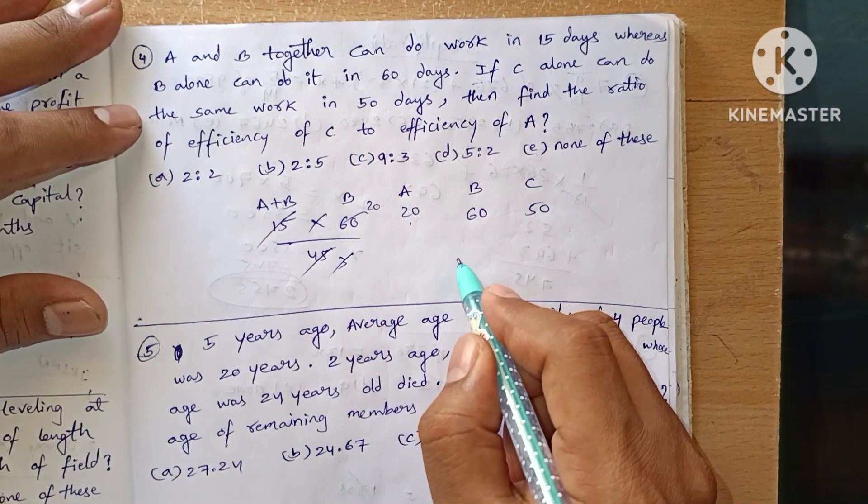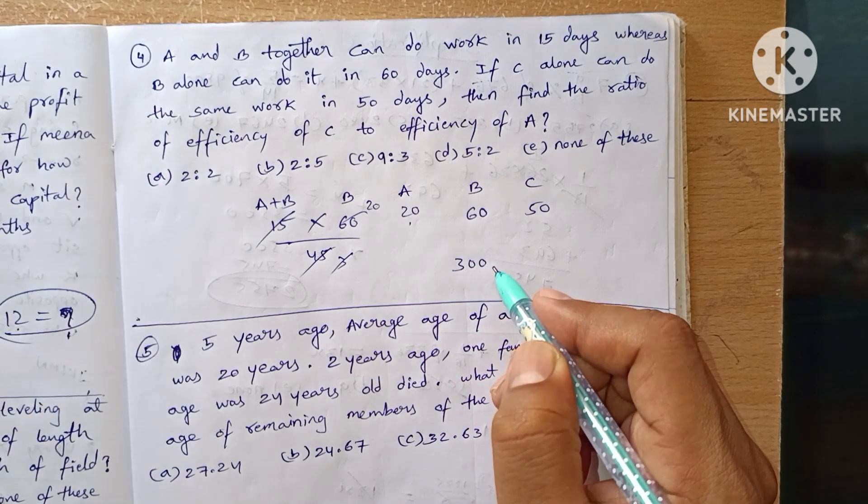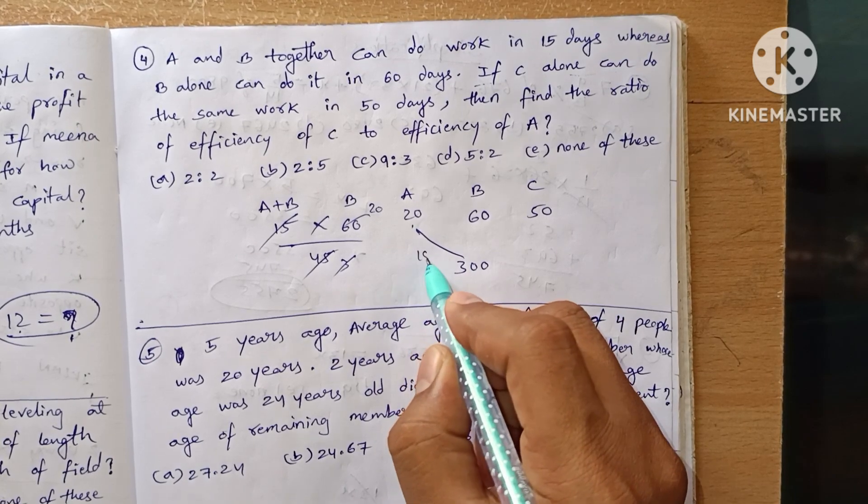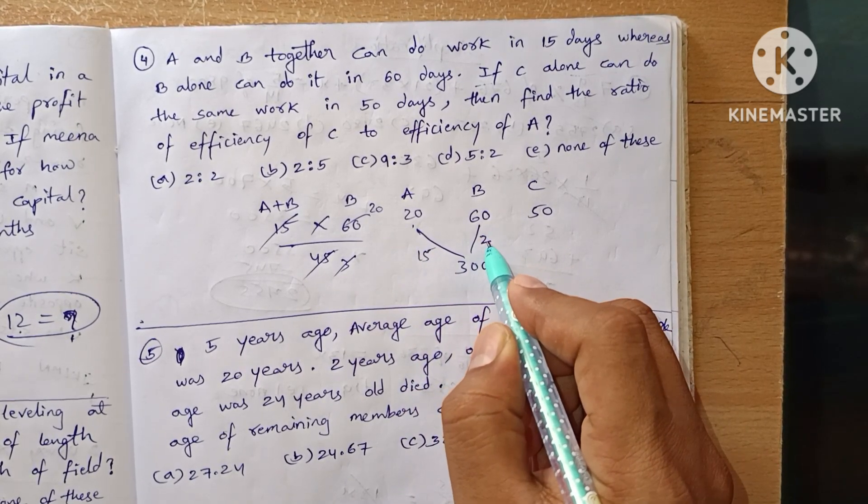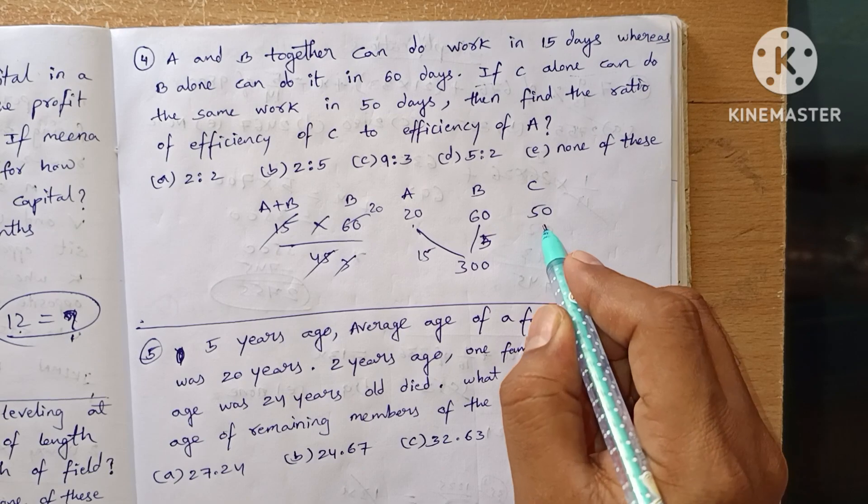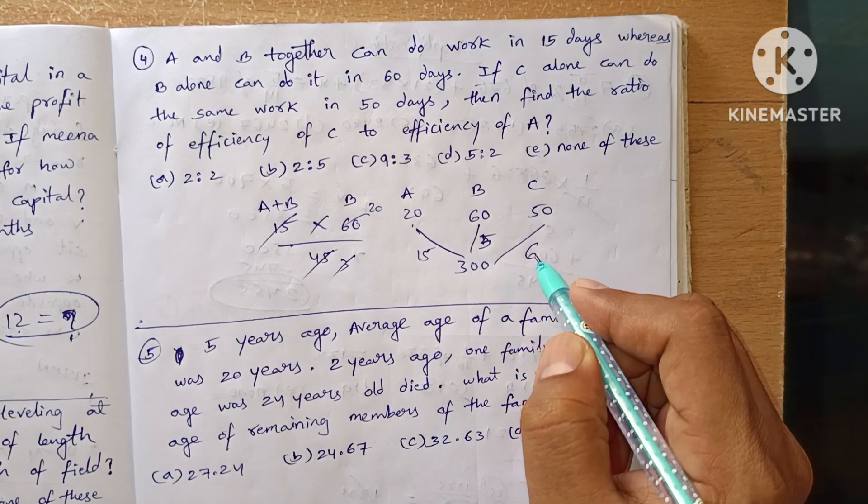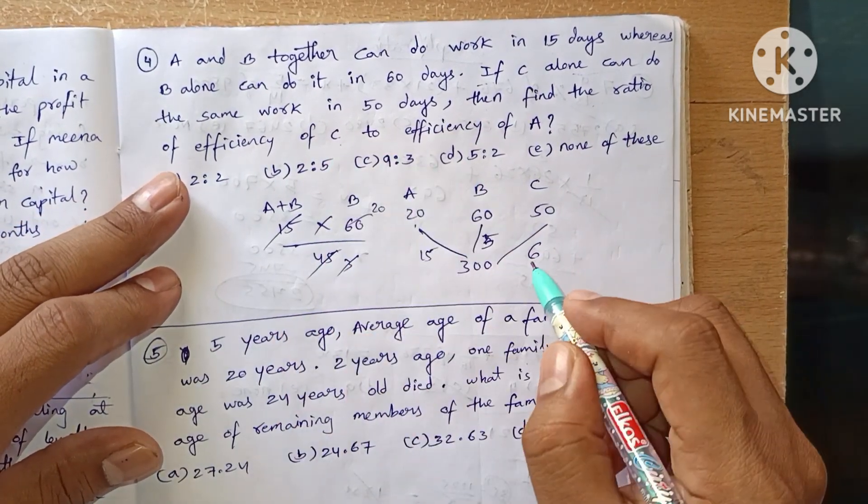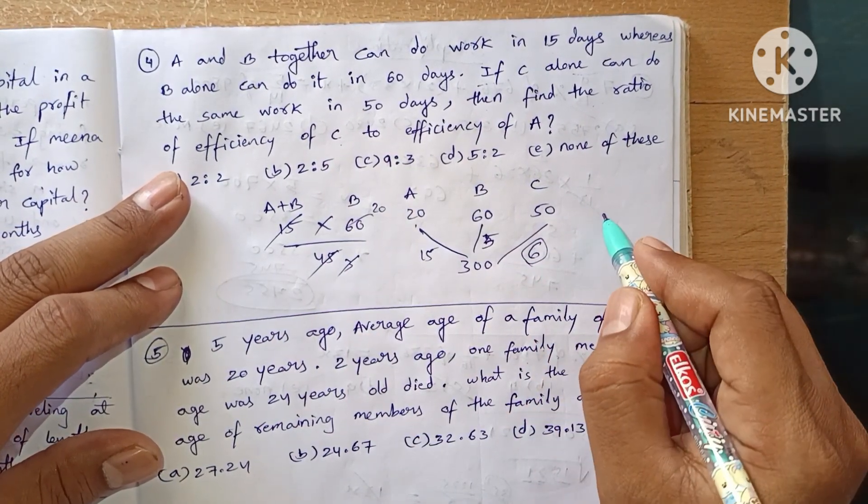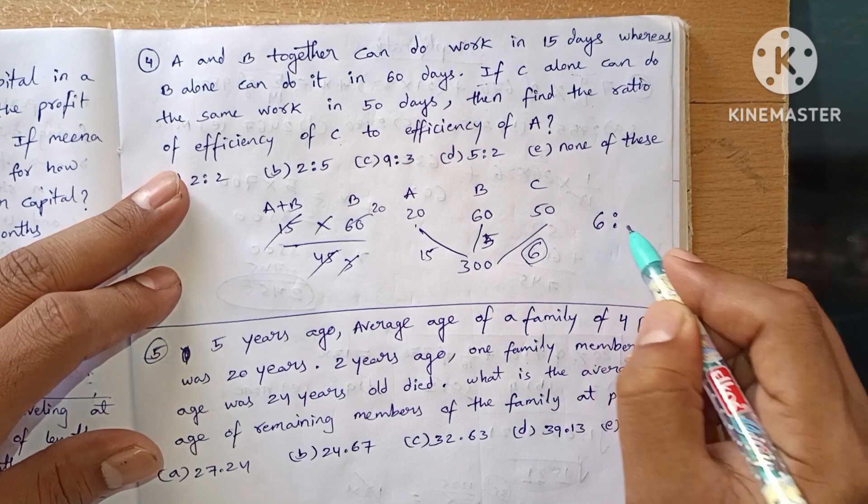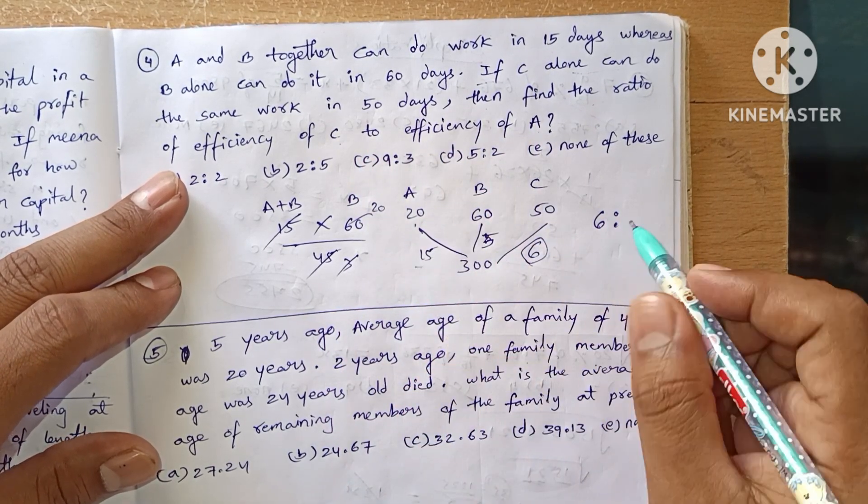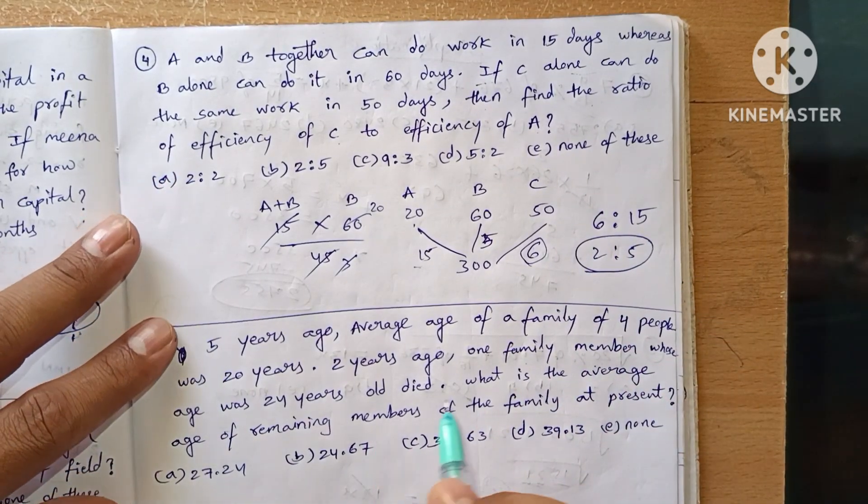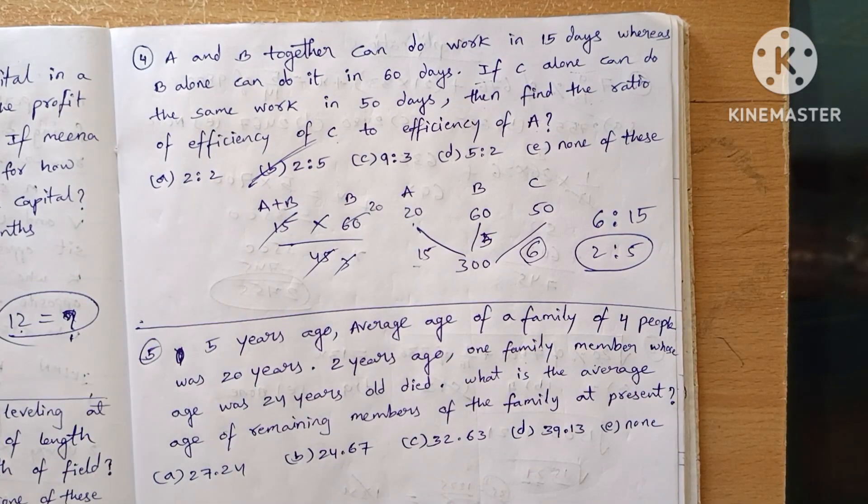If C alone can do the same work in 50 days, what will be the LCM of all these three? It is 300. A's efficiency is 15, B's is 5, C's is 6. Now we need to find the ratio of the efficiency of C to the efficiency of A, which is 6 to 15. Simplifying, we get 2 to 5. So option B is our answer.